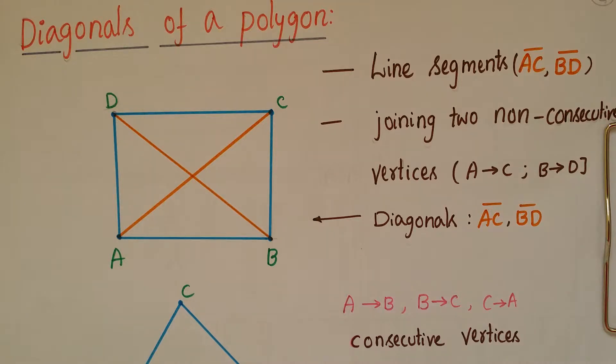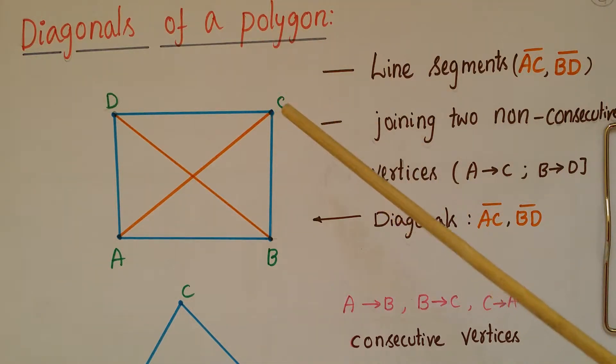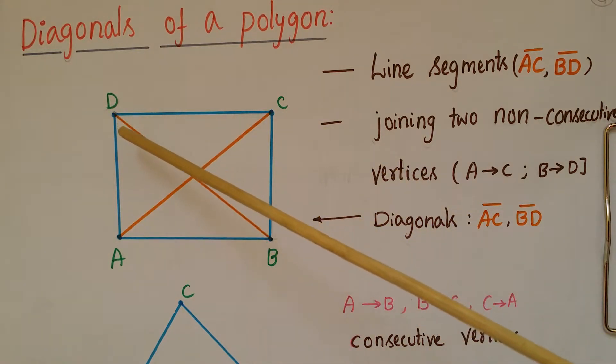Hello everyone, today I am going to explain the diagonals of a polygon. Diagonals are line segments joining two non-consecutive vertices, like AC here. AC are two non-consecutive vertices, and BD are also two non-consecutive vertices.